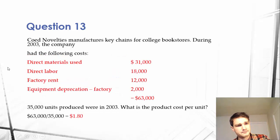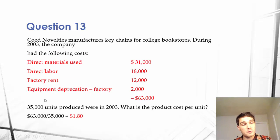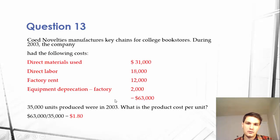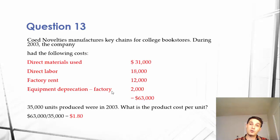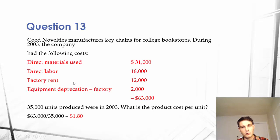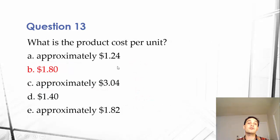So if we add all this up — direct materials, direct labor, factory rent, and equipment depreciation on the factory — we get $63,000. We know that 35,000 units were produced in 2003. So $63,000 divided by 35,000 units gives you $1.80 per unit. We know that it costs $1.80 per unit to produce the product. That's very useful because we can figure out how much we should price this product to make a profit and stay in business. Our answer is B — $1.80 is our product cost per unit.